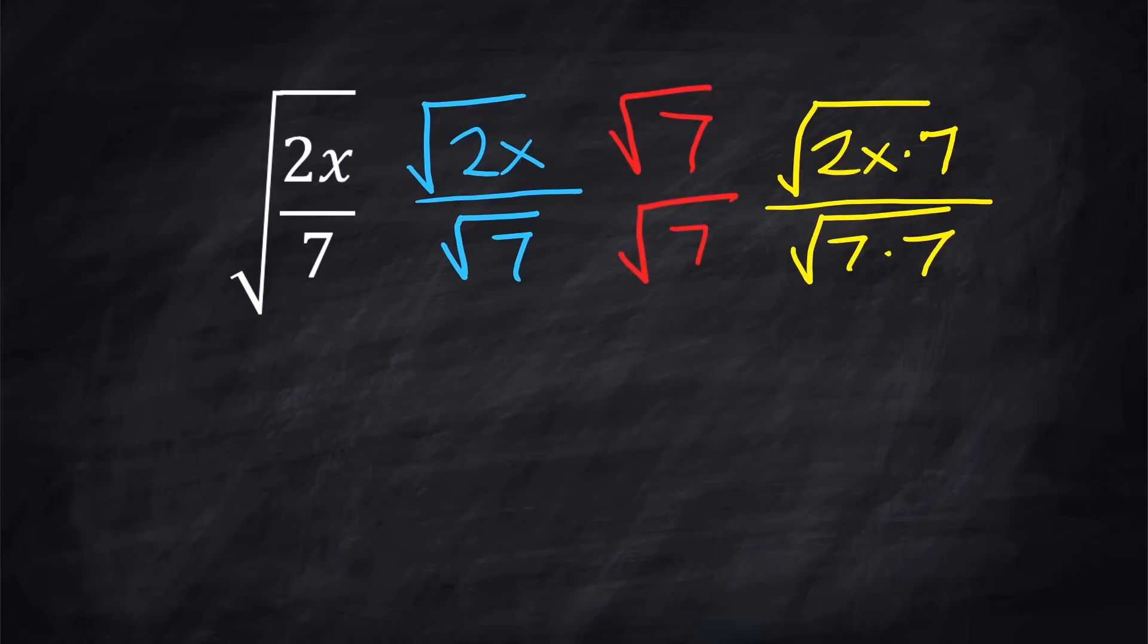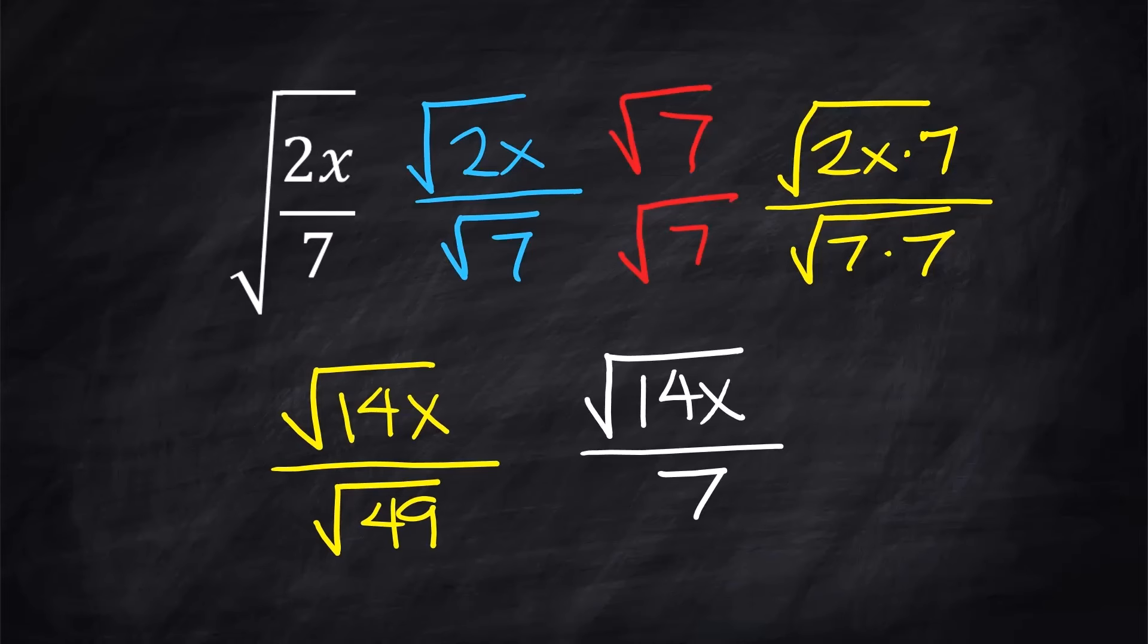and the square root of 7 times 7 on the bottom. Works out to be square root of 14x over the square root of 49, but the square root of 49 is the number 7.